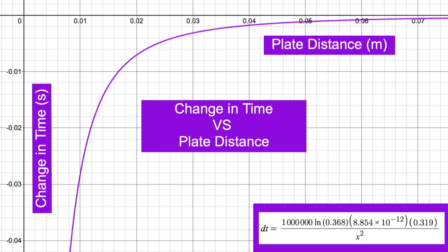Now, if we graph that equation, we can see the sensitivity of the whole system. You can see as I move closer to the plate, to the other plate, the change in time starts to increase a lot more. And you can see how it only starts to get really sensitive at around a plate distance of 0.03 to 0.05 meters.